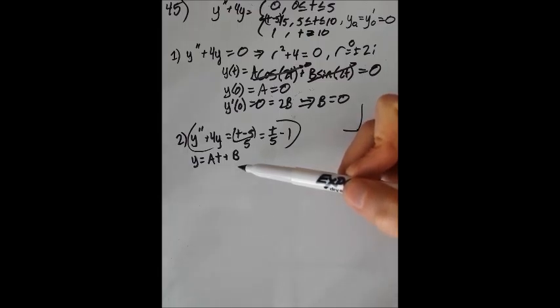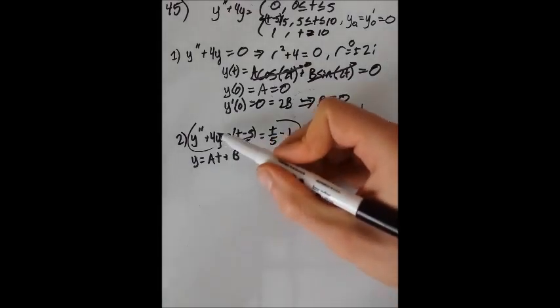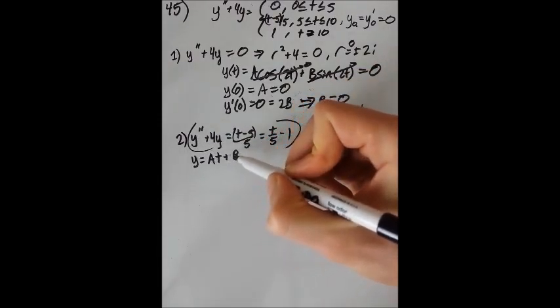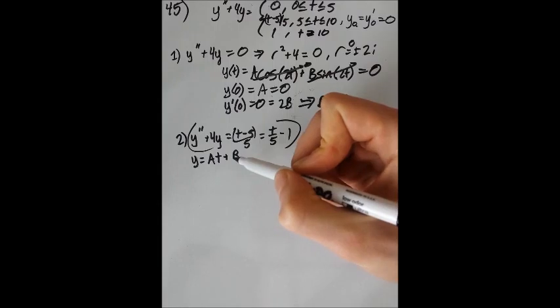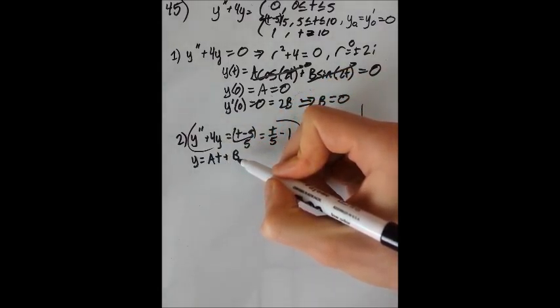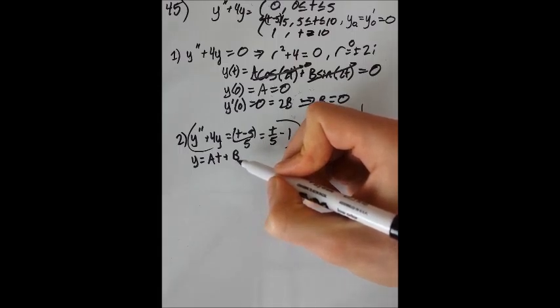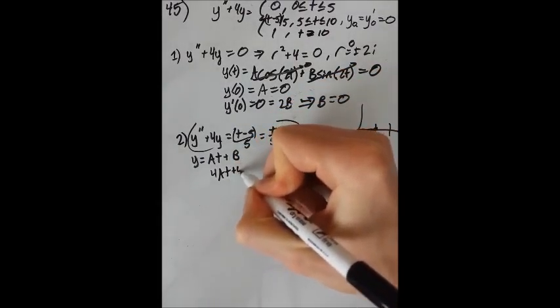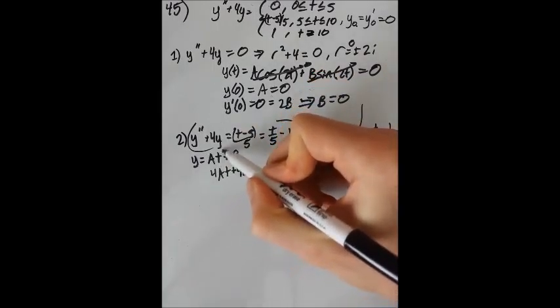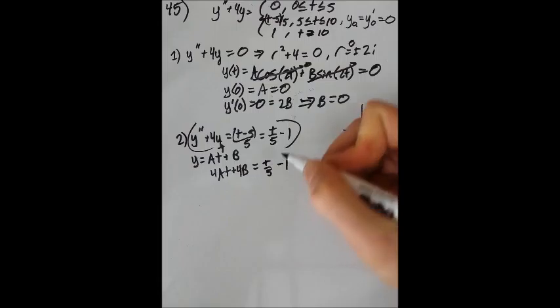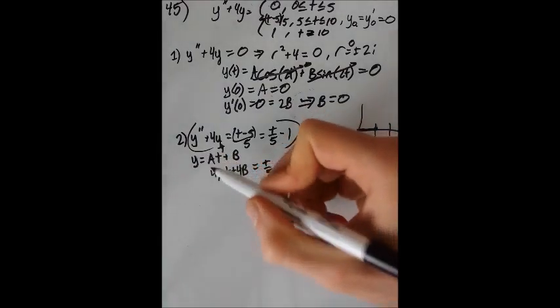So now we get to plug that in and solve for it. So assuming that that's the solution, now let's plug that back into the equation. So y double prime kills both of these terms. y double prime is zero here. y is just this. And so we can see that the only possibility would be plugging in 4at plus 4b. Plugging that in for y. And that equals t over 5 minus 1.